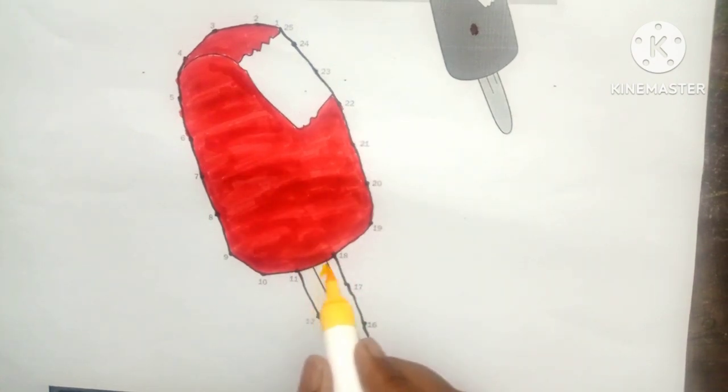Now we will give it the yellow color. Let's do it quickly, otherwise the ice cream will be gone.